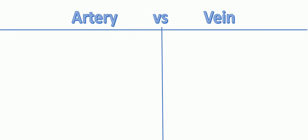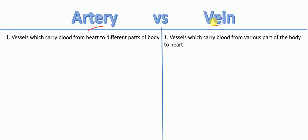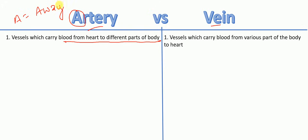In this lecture, I'm going to talk about the differences between artery and vein. Arteries are the vessels which carry blood from the heart to the different parts of the body. To remember this: A for artery, and A also refers to 'away' — away from the heart.